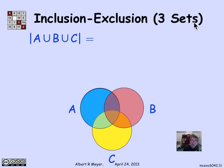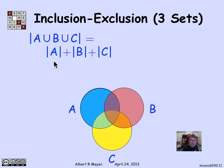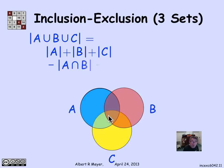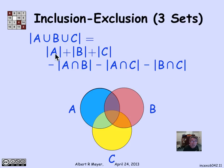For three sets, the size of A union B union C, shown with a Venn diagram of all possible overlaps, is computed by adding the sizes of A, B, and C. However, this sum counts the lens-shaped intersection of A and C twice, A intersection B twice, and B intersection C twice. So we subtract one occurrence each of A∩B, A∩C, and B∩C so those elements are only counted once.